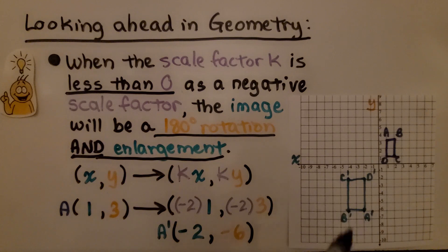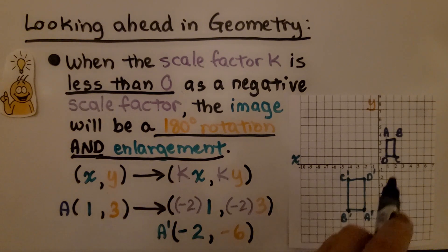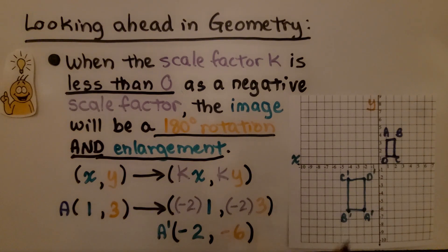So it was a rotation of 180 degrees and an enlargement. We can apply that negative 2 scale factor to each of the vertices of the preimage to be able to map the image.